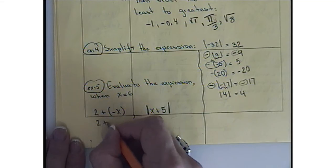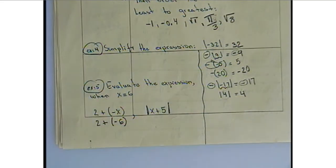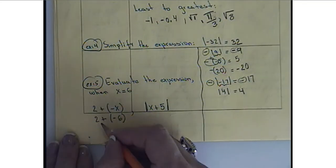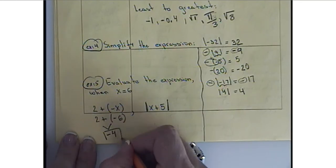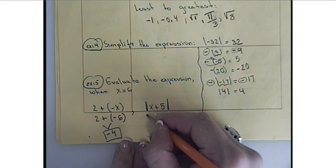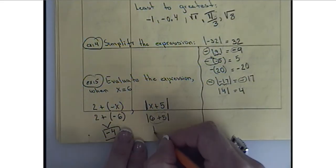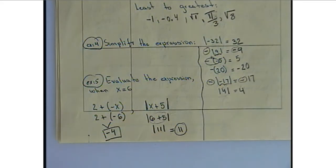As a final review, we evaluate an expression when x equals 6. Substitute 6 for x: 2 plus negative 6 gives a final answer of negative 4. For the second example, we have absolute value of x plus 5 — substituting x equals 6 gives absolute value of 11, and the absolute value of 11 is positive 11. That is the end of today's video — have a great day, everybody, and we will have questions during class time.